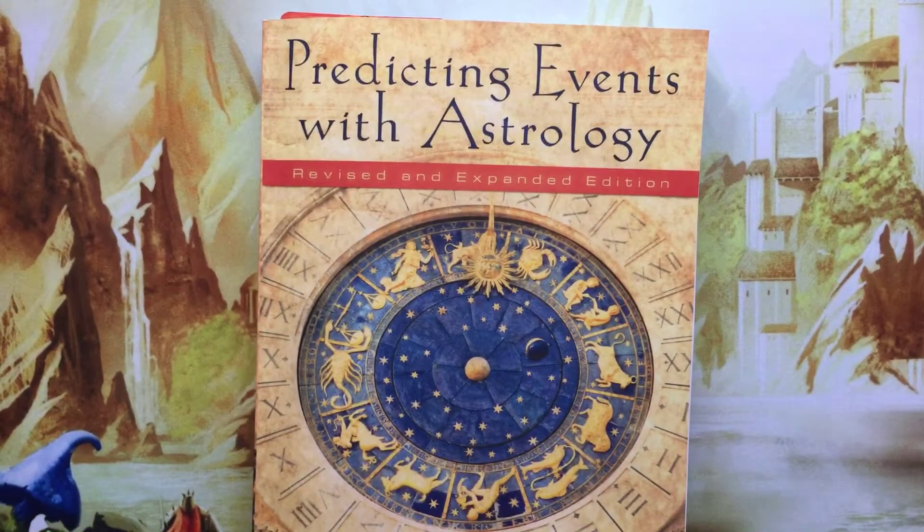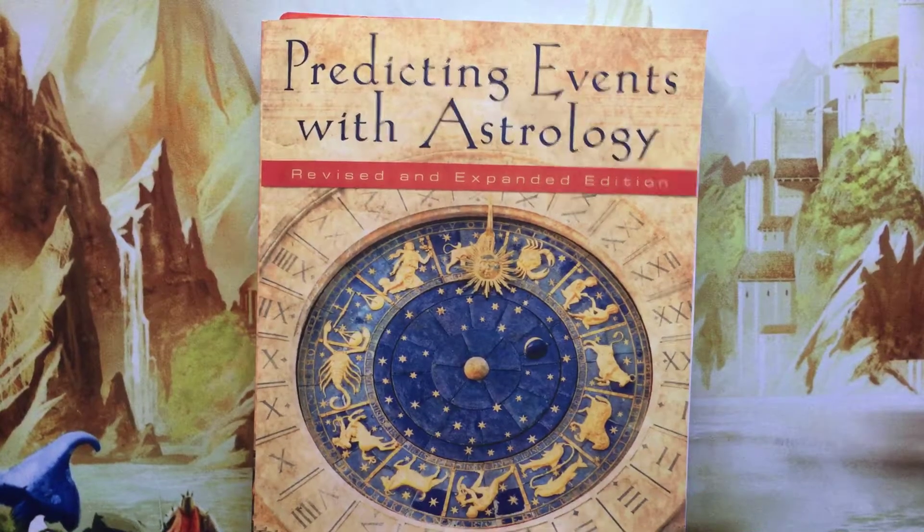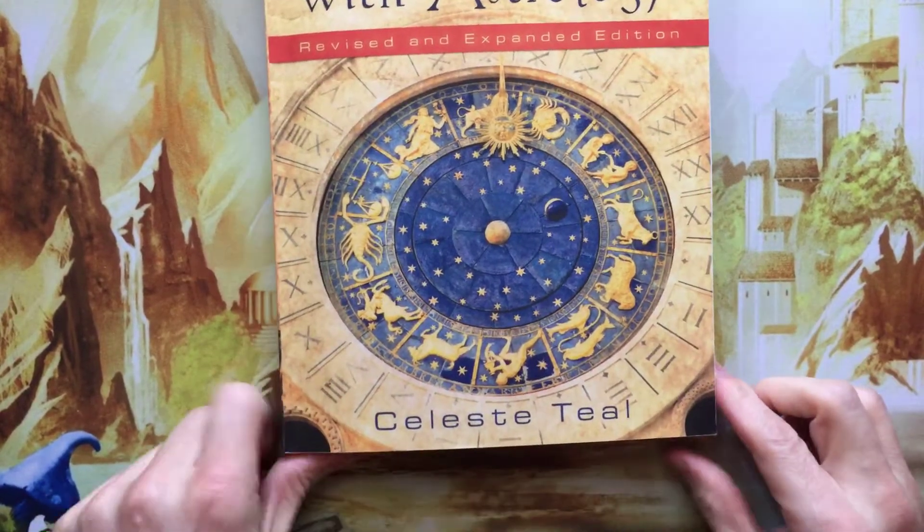Hi, I'm Terry Ockel, and this is a book review, Predicting Events with Astrology, from Celeste Teal.